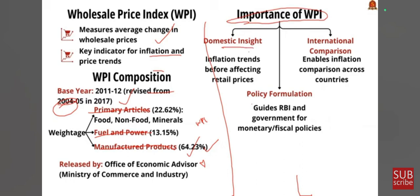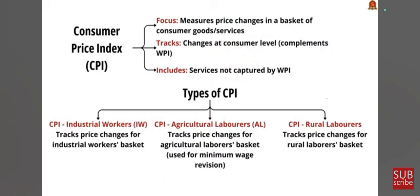Let us see why WPI is important in an economy. Firstly, it gives domestic insight — WPI is crucial for understanding inflation at the wholesale level before it affects the retail market, helping policymakers, businesses, and economists to gauge inflationary trends. Secondly, it assists the RBI and government for monetary or fiscal policies. Thirdly, it helps in international comparison — it allows inflation comparison across countries and aids in economic analysis and international trade decisions.